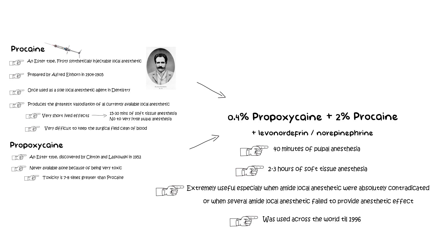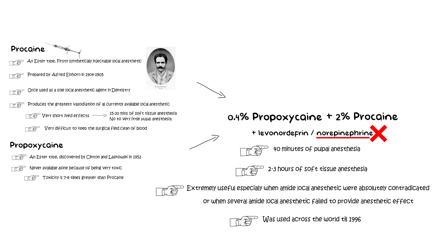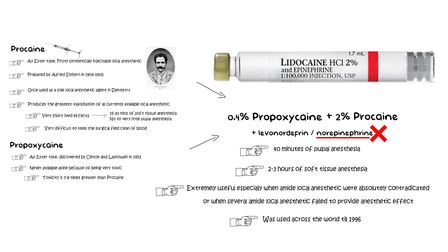One last thing to add is that the use of norepinephrine in local anesthetic solution is no longer recommended, especially in areas where prolonged ischemia can lead to tissue necrosis. In the oral cavity, this is most likely seen in the palate. Some articles also suggest a link to the vasoconstriction of cerebral blood vessels in both young and old adults in a dose-dependent manner when norepinephrine is used. Hence, norepinephrine in local anesthetics is now replaced by epinephrine.